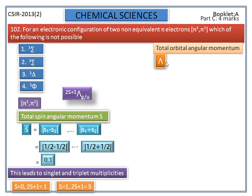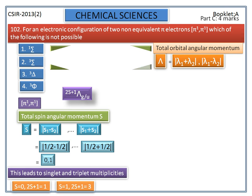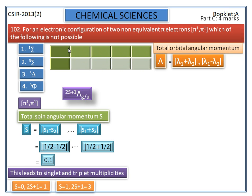Now we calculate the total orbital angular momentum. We need the following terms: if λ = 0, the term symbol is Σ (sigma); if λ = 1, the term symbol is Π (pi); if λ = 2, the term symbol is Δ (delta); if λ = 3, the term symbol is Φ (phi).